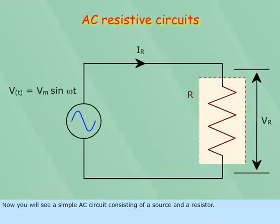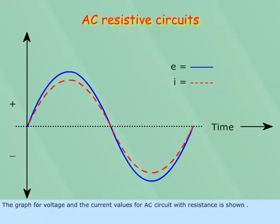Now you will see a simple AC circuit consisting of a source and a resistor. The graph for voltage and current values of AC circuit with resistance is shown. Look at the graph.